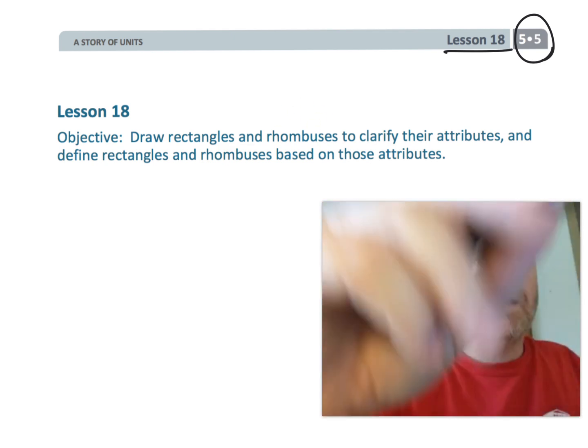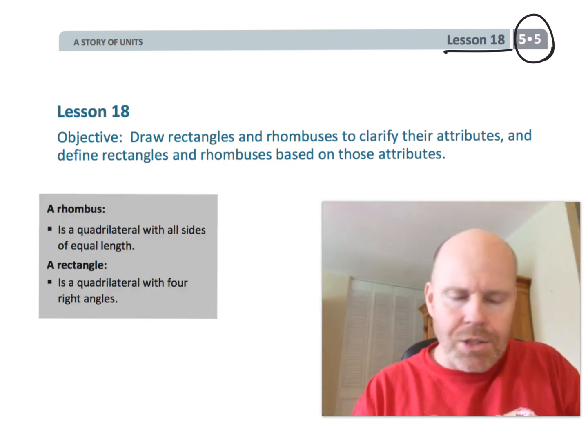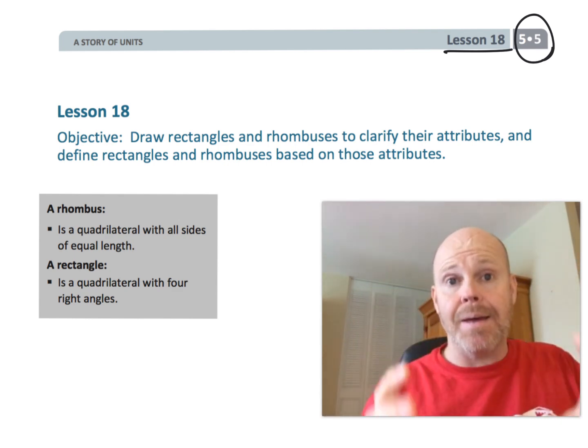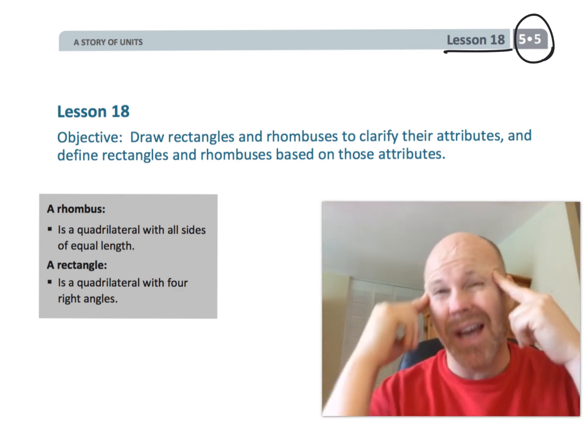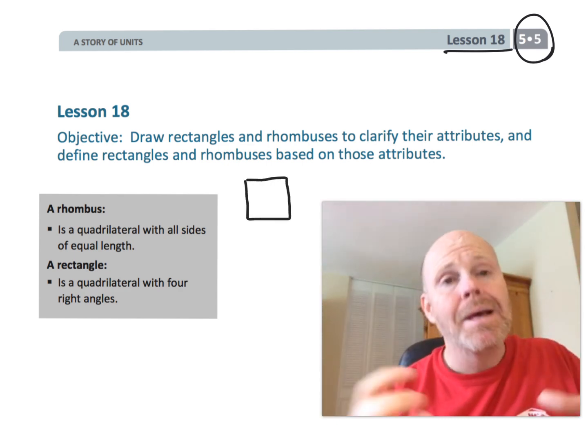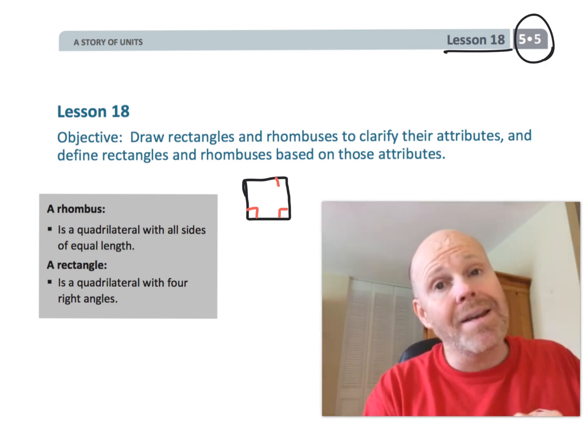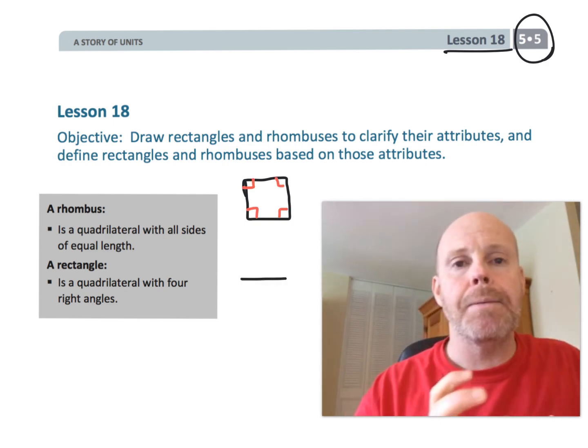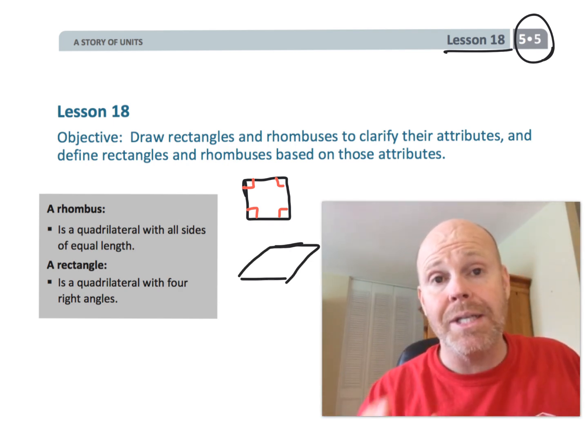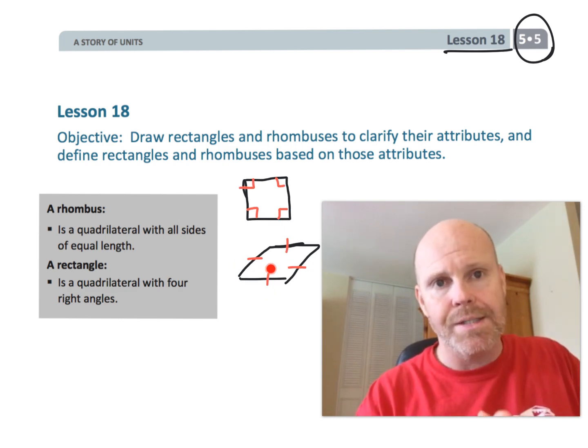What a rhombus is, it's a quadrilateral where all four sides have the same length. Now that sounds like it's a square, right? Quadrilateral where all four sides are the same length. But a square has 90 degree angles, where a rhombus does not necessarily need to have all four angles being 90 degrees. The only requirement for a rhombus is that it's a quadrilateral where all four sides are the same length.